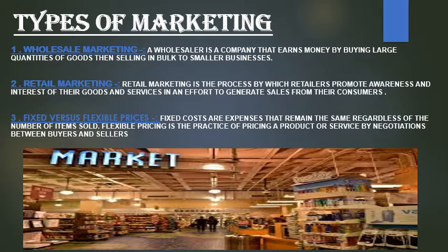The second type is retail marketing. In retail marketing, there is a fixed price — the printed price of the goods — because retailers first take their goods from wholesalers and then add their margin before selling to customers. And at the very last, there is fixed versus flexible prices. Fixed price means there is no bargaining — the cost remains the same. But in flexible prices, bargaining is possible and the cost can go up or down according to what the customer wants. That is the flexible price.